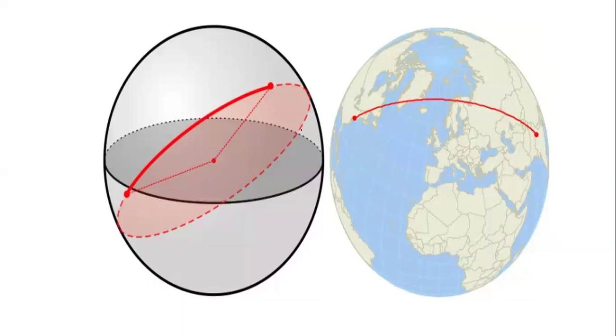So, wherever possible, the sailors and aviators follow great circle routes. By following great circle routes, they save in time and fuel.